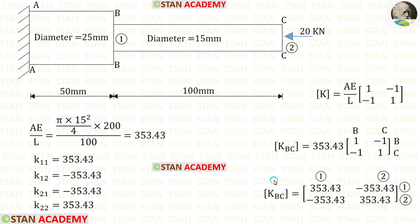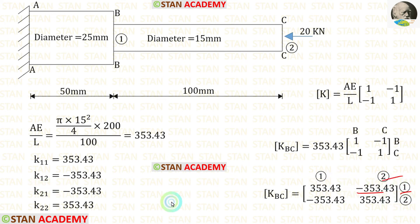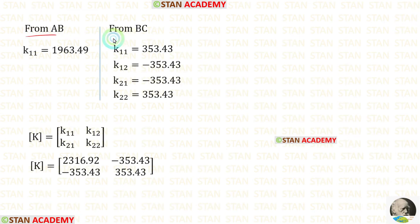Now let us extract the stiffness matrix elements from the BC element matrix: K11, K12, K21, and K22. Having found the stiffness matrix elements from both bar AB and bar BC, we can now assemble the global stiffness matrix.